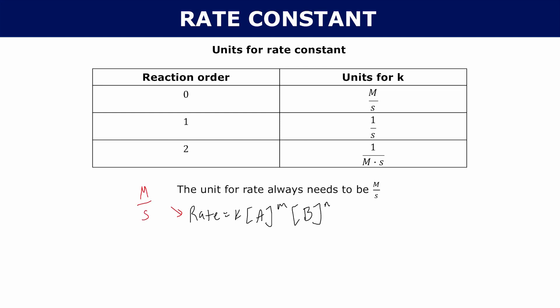The problem is that your concentrations are in units of molarity raised to powers m and n, which will always be different. So you need some way to balance out the units in order to get molarity per second — and that's what k is there for, to balance everything out.